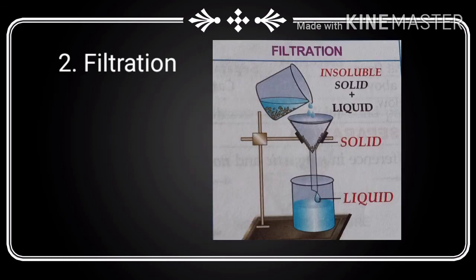The next method is filtration. Filtration is based on the principle of separating insoluble solid particles from a solid-liquid mixture. By using filter paper, we separate solid from liquid. An example is filtration of chalk particles in water, where solid chalk particles are filtered out from the water.